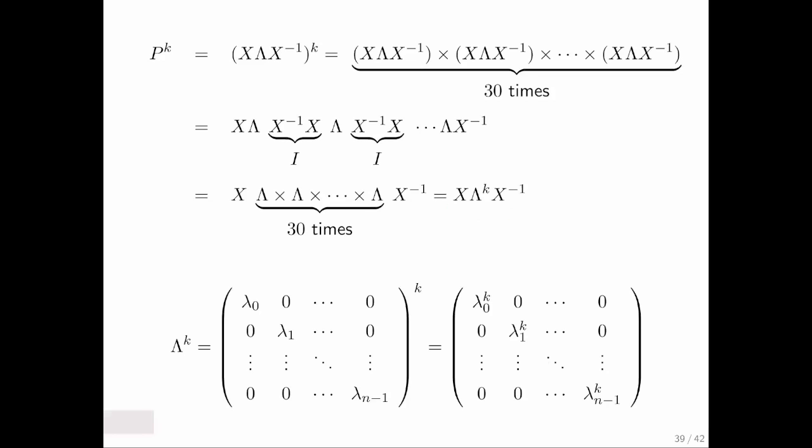But if you take a diagonal matrix and raise it to the kth power, that's a matter of taking the diagonal elements and raising them to the kth power. And obviously that's a lot cheaper than multiplying the matrix P 30 times.